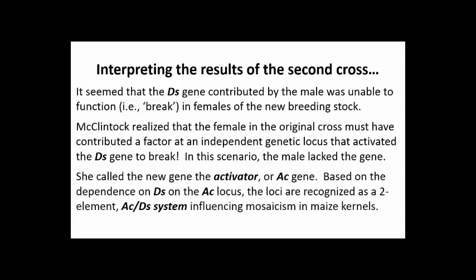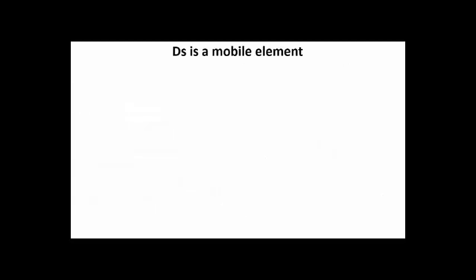McClintock called the new gene the activator, or AC gene. She defined ds and ac as an AC-DS system, responsible for the genetics behind mosaic seed coloration.